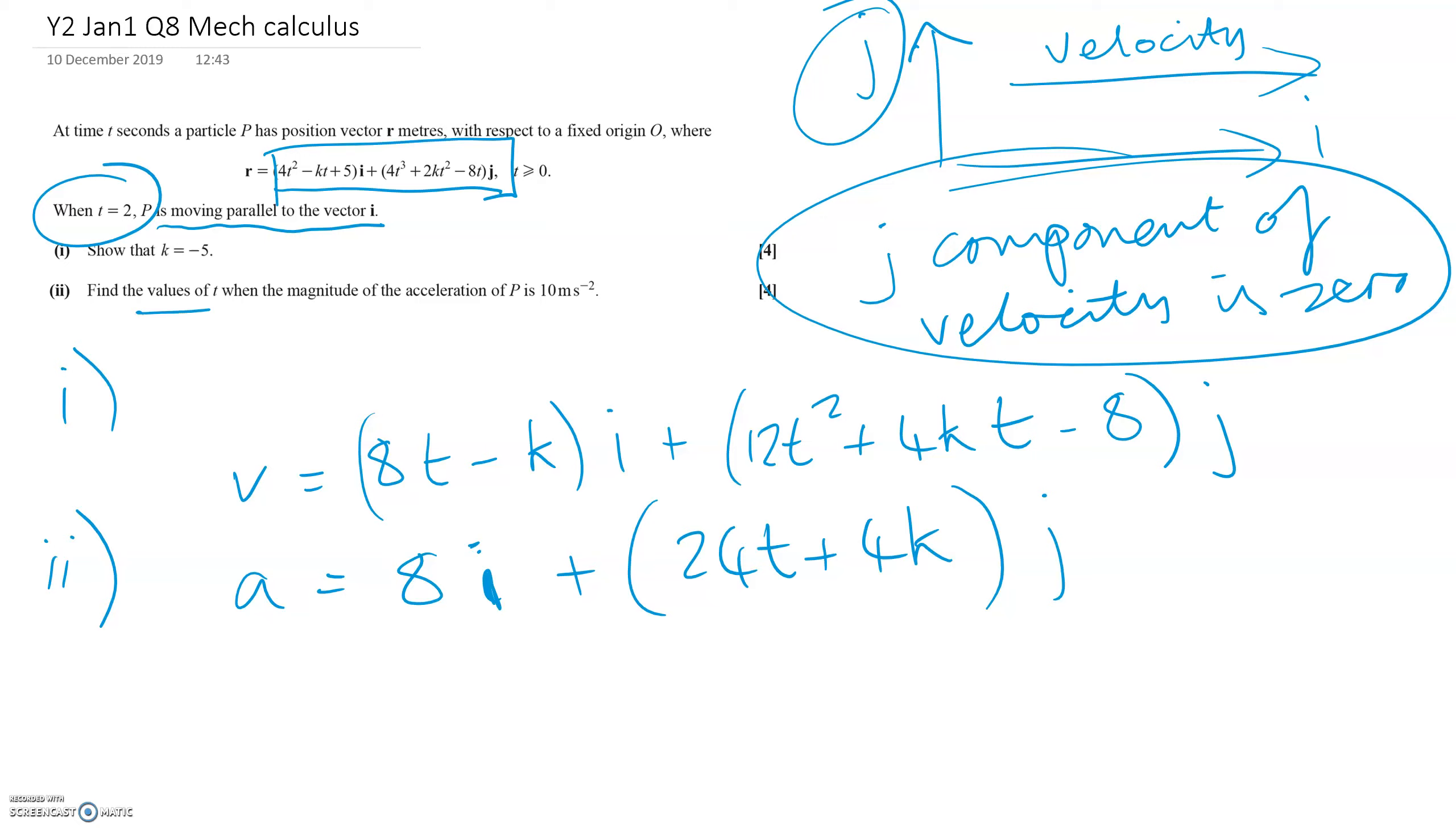The question says find the values of T when the magnitude of the acceleration is 10. To find the magnitude, we use Pythagoras' theorem. So 8² plus the J component squared equals 10². So it equals 100.